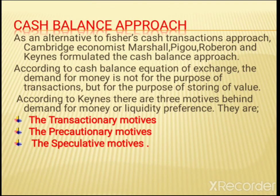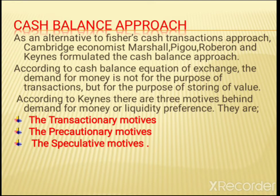Next, we move on to the cash balance approach, also known as the Cambridge version. As an alternative to Fisher's cash transaction approach, Cambridge economists Marshall, Pigou, Robertson, and Keynes formulated the cash balance approach. According to the cash balance equation of exchange, the demand for money is not for the purpose of transaction but for the purpose of storing value. According to Keynes, there are three motives behind the demand for money or liquidity preference: the transactionary motive, the precautionary motive, and the speculative motive.